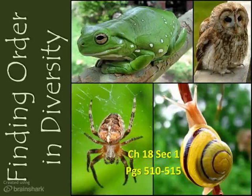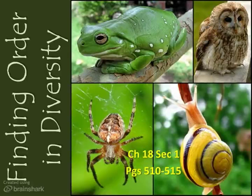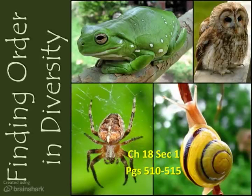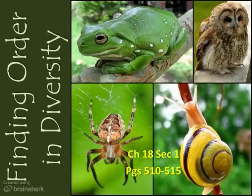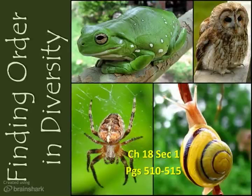Biologists estimate that there are anywhere between two and a hundred million additional species yet to be discovered. Scientists also estimate that there are some species that are becoming extinct before we even discover them. So let's look at how biologists keep all of this organized. Get your paper ready.